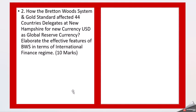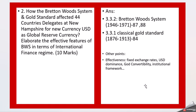Question two is: how did the Bretton Woods System and gold standard affect 44 countries' delegates at the new meeting for the new currency USD as global reserve currency? Elaborate the effective features of the Bretton Woods System in terms of international finance regime. Find this answer in chapter 3. You can write a brief about the BWS system and the gold standard — the classical gold standard — found in chapter 3, page number 87.